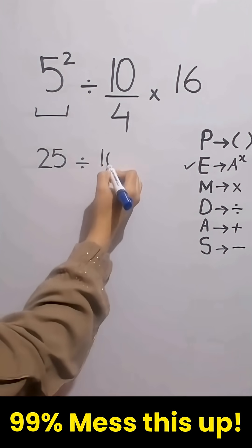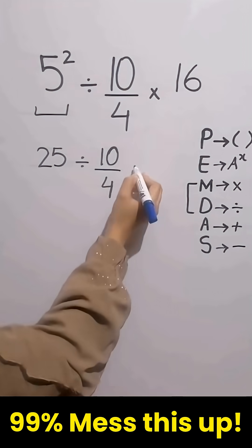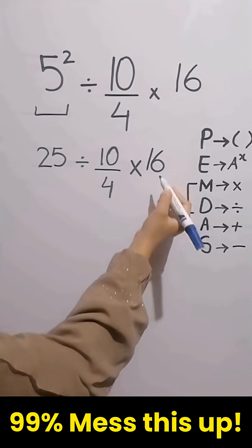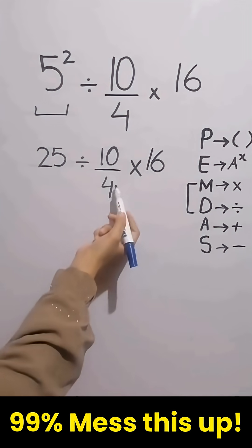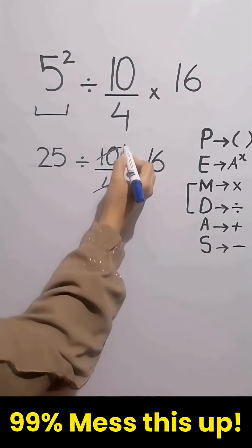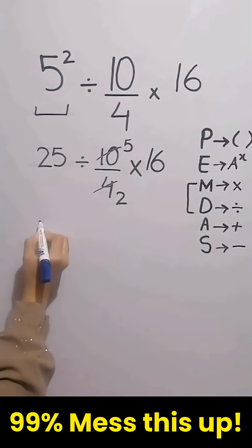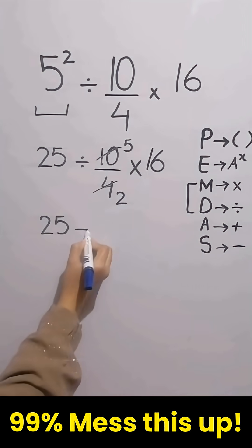Then divide it by 10 over 4 times 16. Now both numerator and denominator cancel with 2 times table, and the whole fraction becomes 25 divided by 5 over 2.